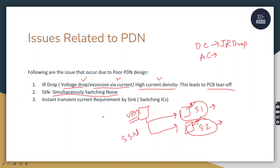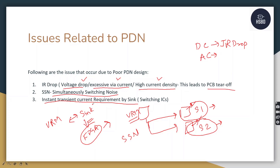The next issue is the instantaneous transient current requirement by the sink. When an FPGA switches its functionality from one function to another, it requires a sudden surge of current — called transient current. That sudden surge of current required by the sink from the VRM increases during switching. The question becomes: will the VRM be able to provide that much current to the sink? This can tamper the power delivery network and needs to be addressed as a priority.